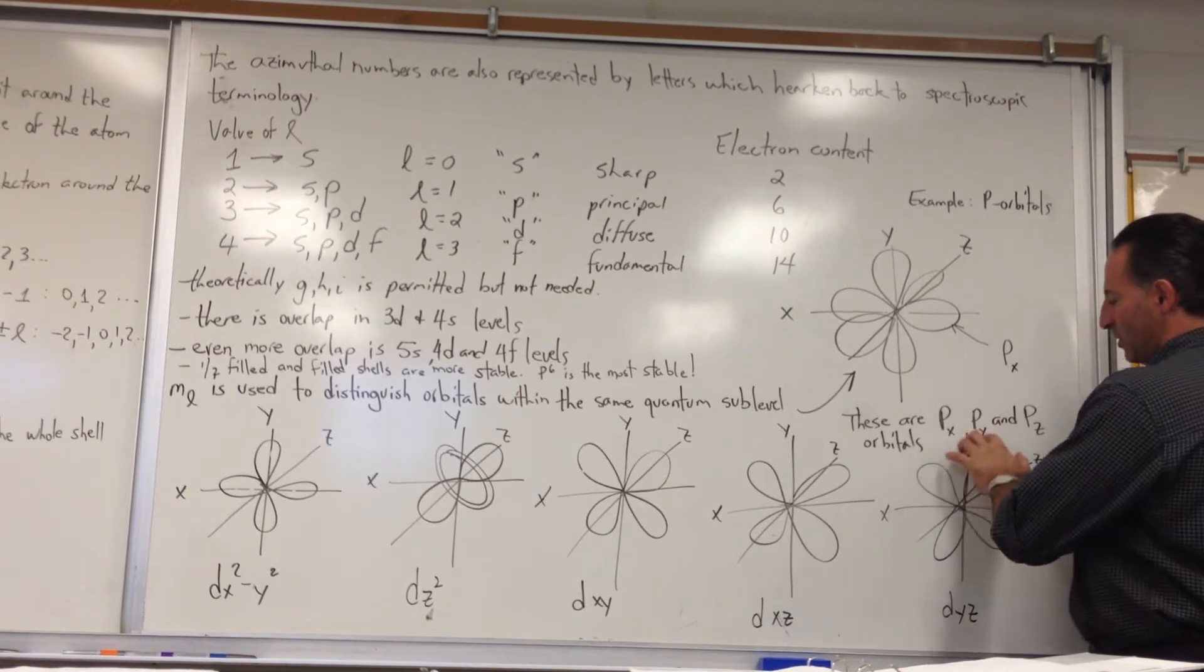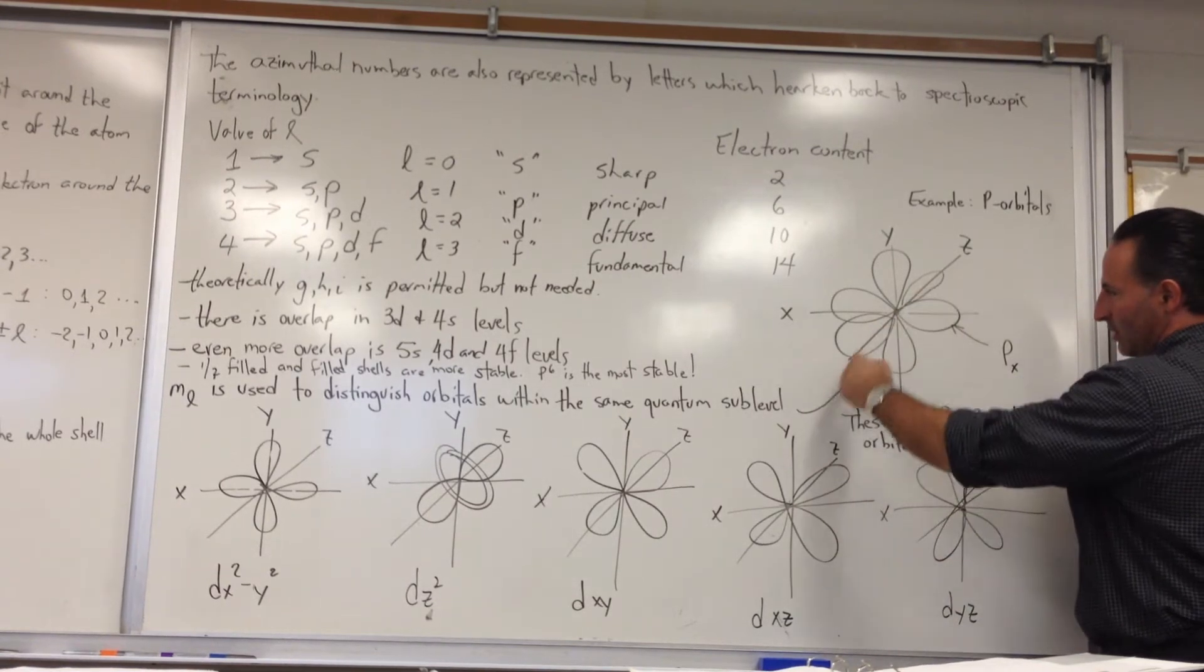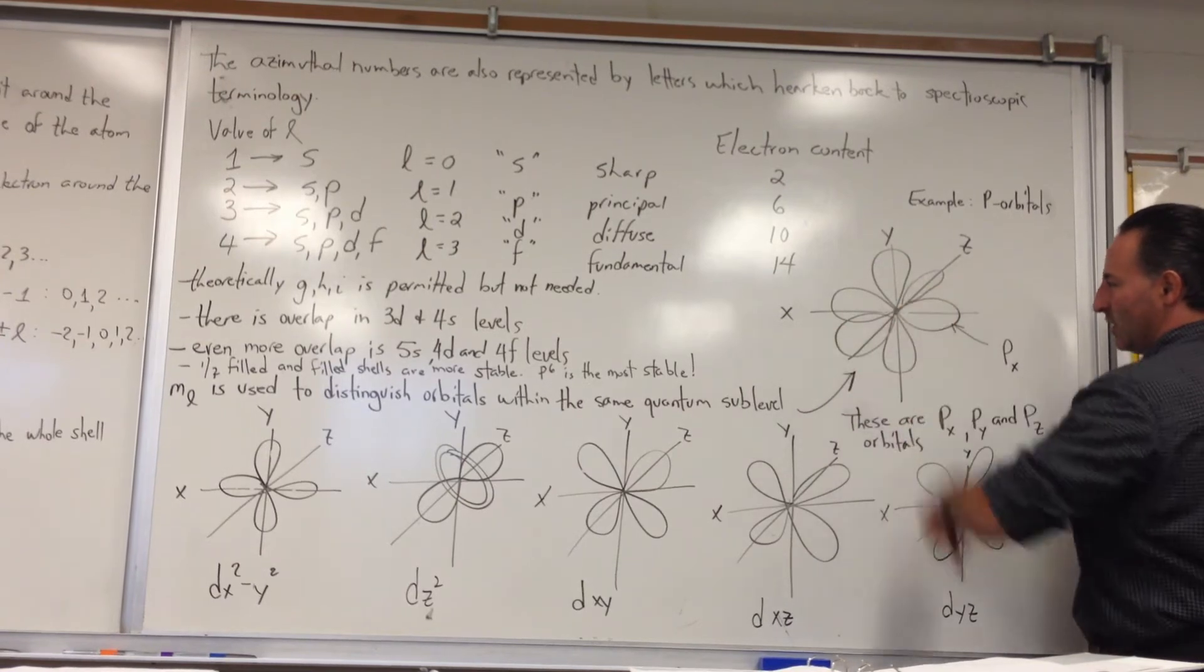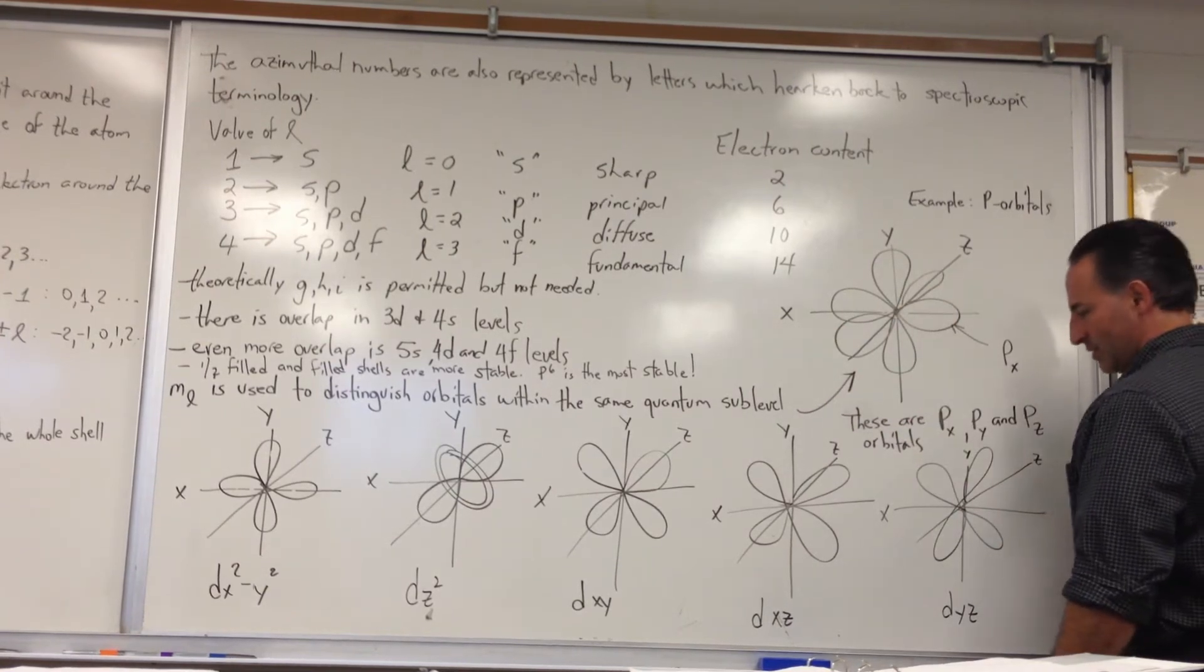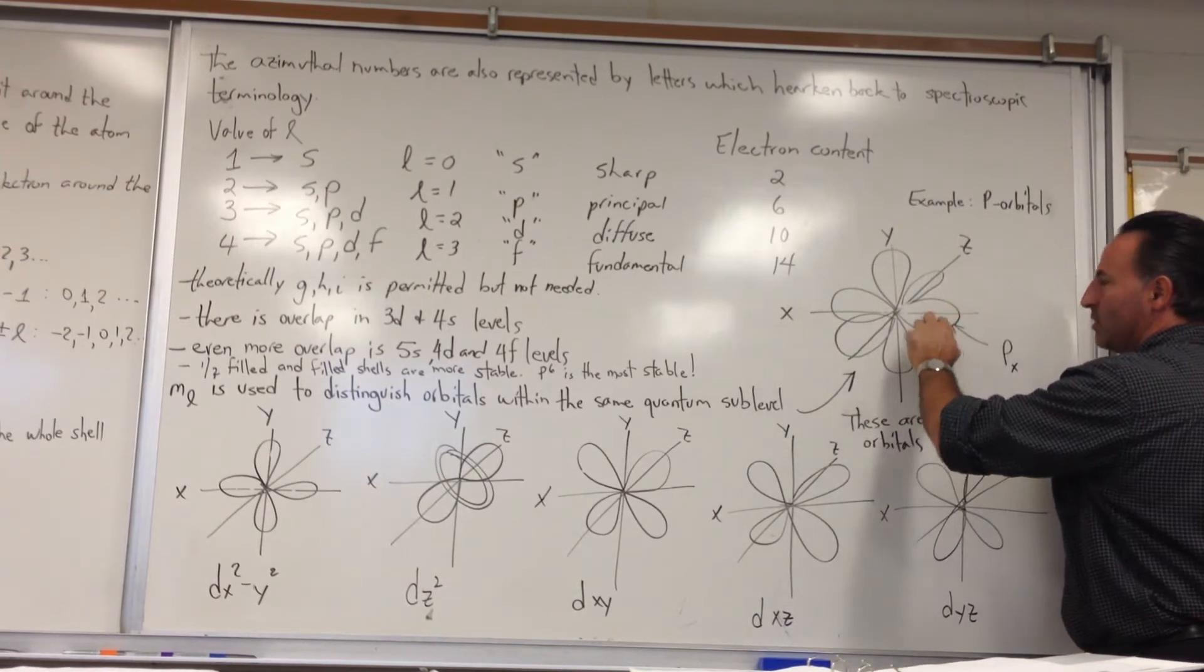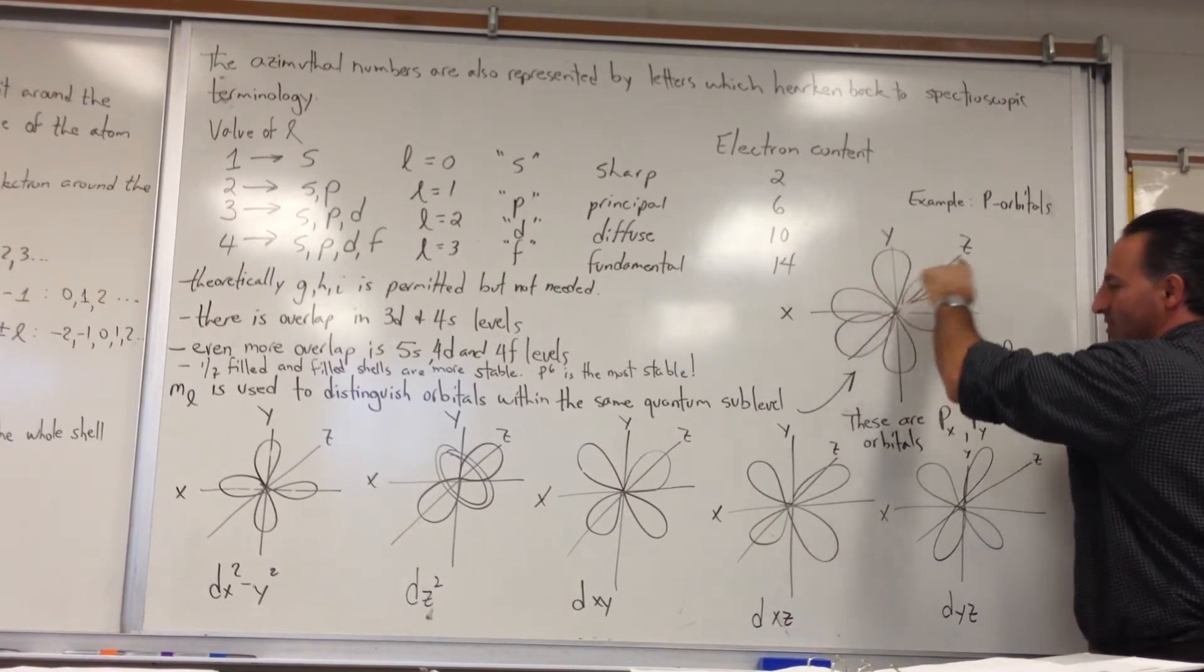So we'll see there's the PX, PY, and PZ orbitals. It's as though they're shish kebabed by the various one of the coordinate plane axes. So the PX orbital lies along the PX axis.